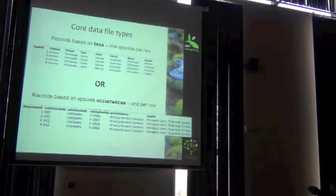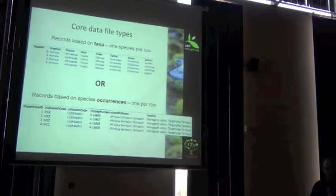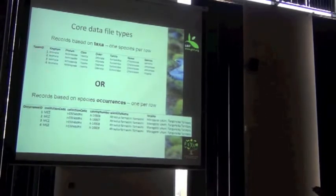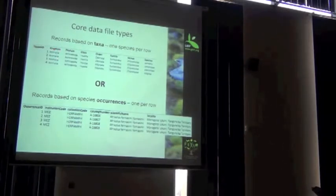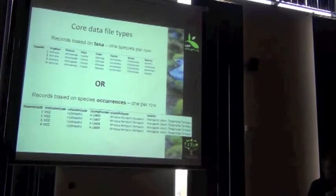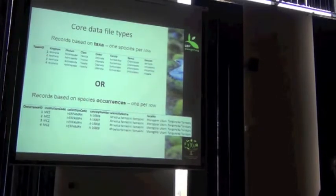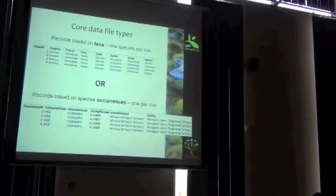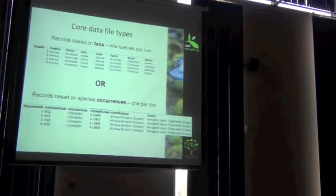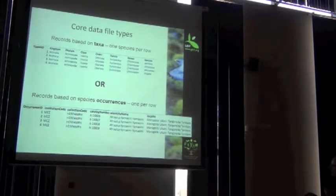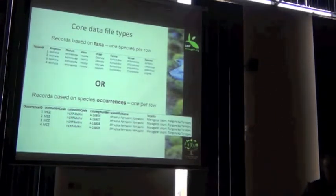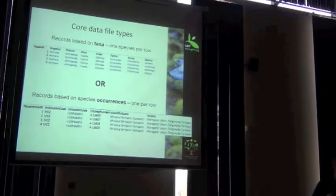The first one is a core file based on taxonomic information. It's got some classification there. Now you're starting to see some of the things that John was talking about before. It's got an ID, one record per row. Kingdom, phylum. It's got the classification organized according to the Darwin Core terms.